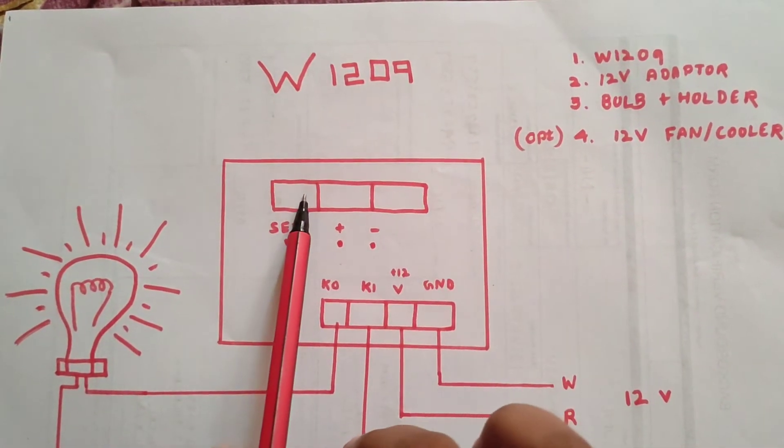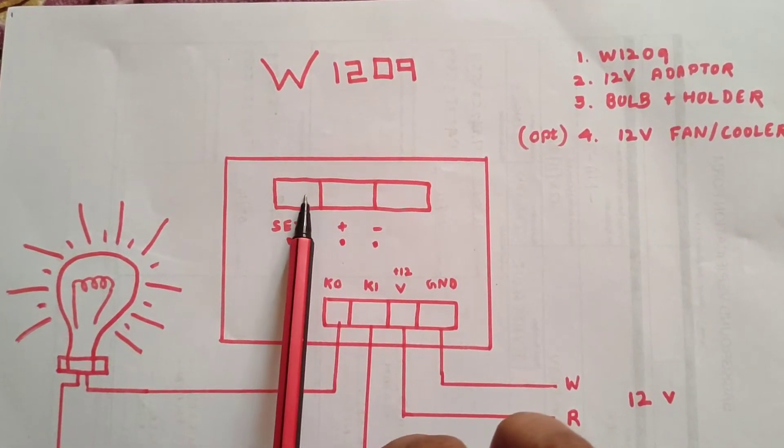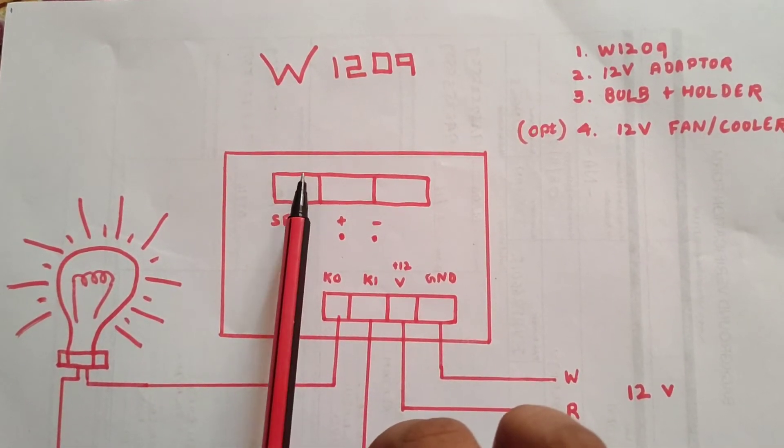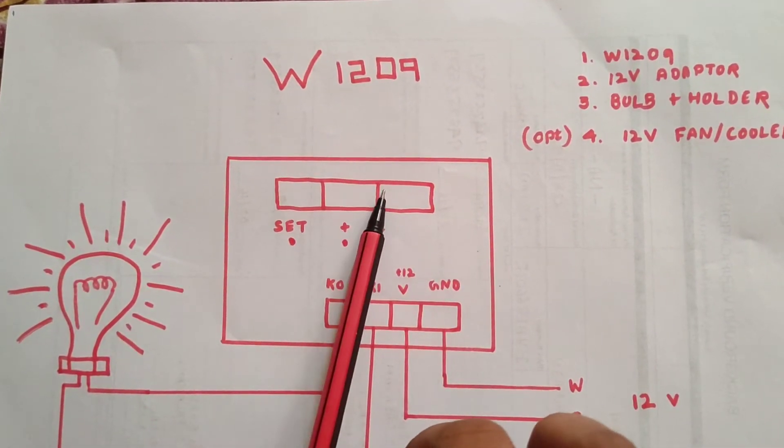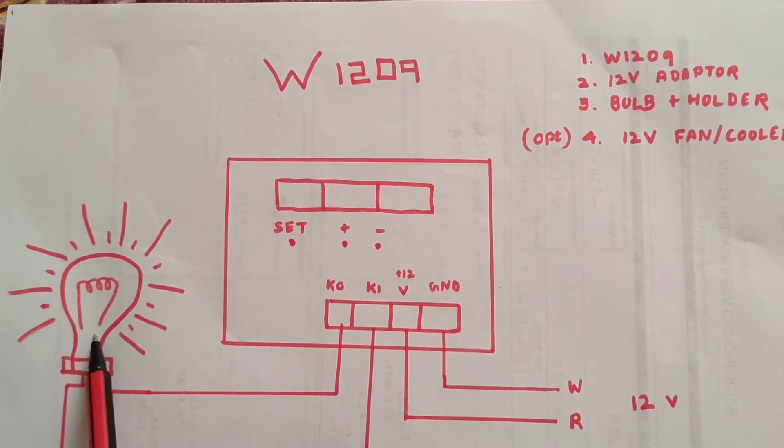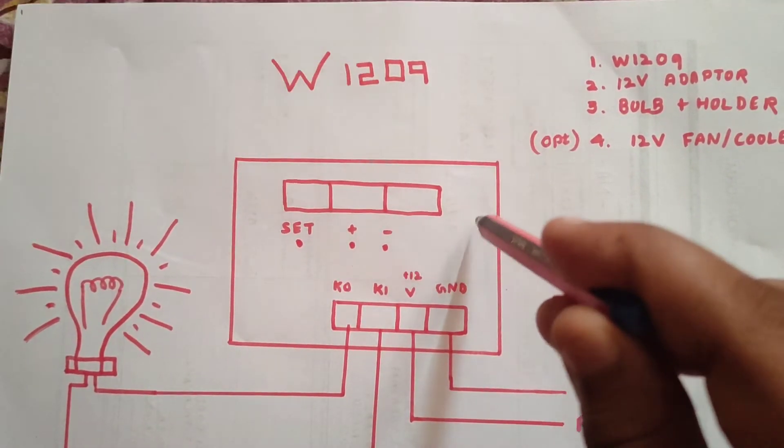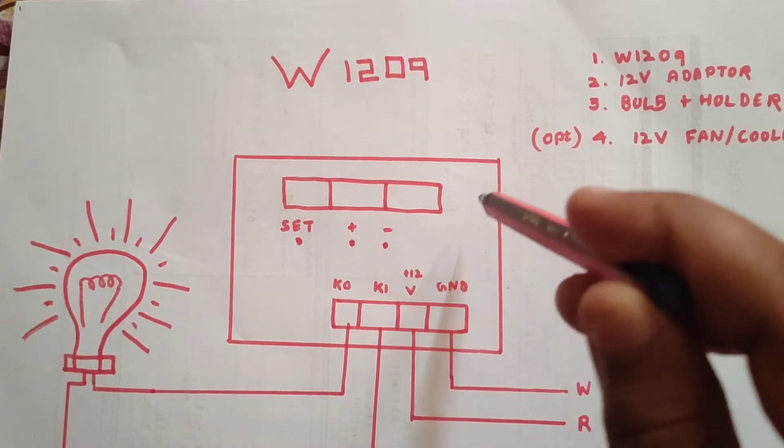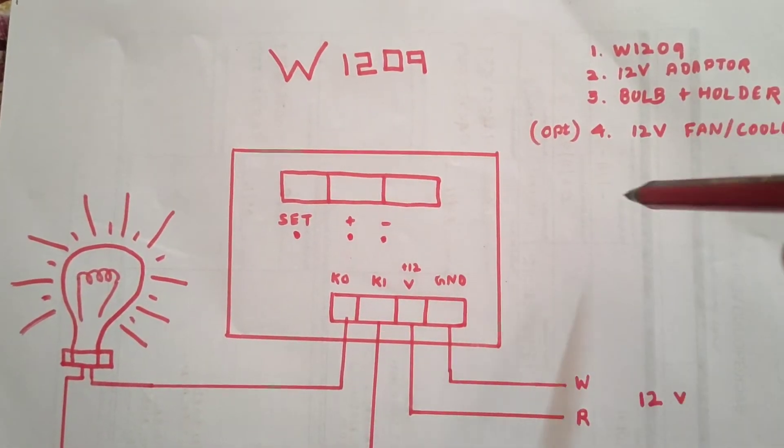Now we set the circuit to 37 degrees. Set the bulb in itself. I have given a wire here, the temperature measurement wire that I will explain in this video.